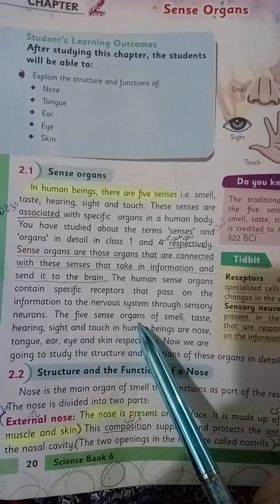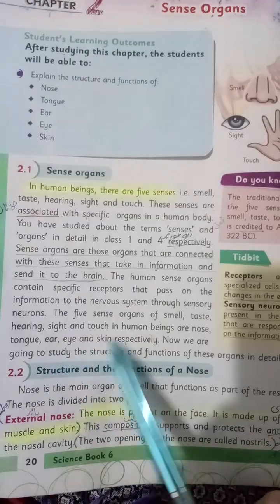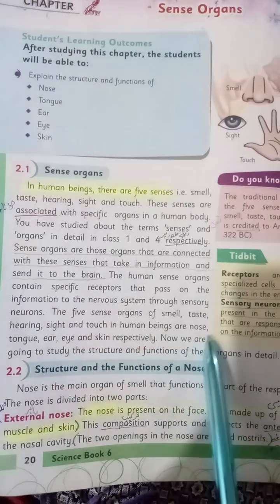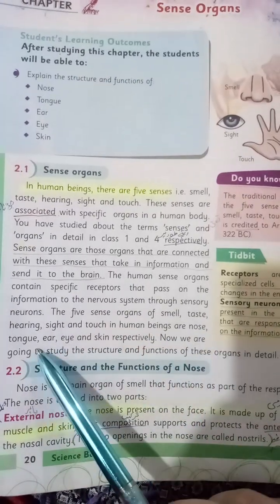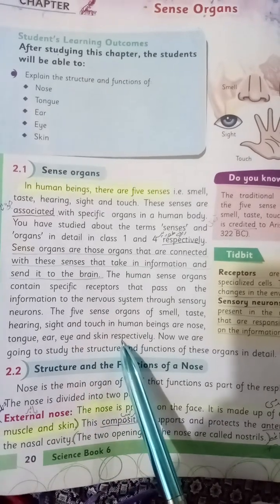The five sense organs for smell, taste, hearing, sight, and touch in human beings are the nose, tongue, ear, eye, and skin.